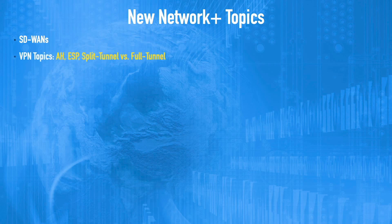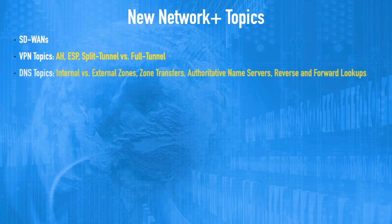VPNs, or virtual private networks, were on the previous exam, but you now need to know additional terms — such as the difference between authentication header and encapsulating security payload, and the distinction between a split tunnel and a full tunnel VPN connection. DNS, or domain name services, was on the previous version of the exam, but now you need to know more terms listed on screen. Also, a new type of cable you need to know about is not a coax cable but a twin-axial cable — we'll see what that looks like and where it's used in a few moments.